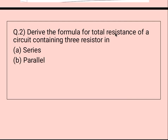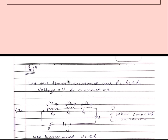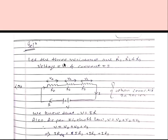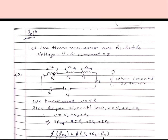Question number two: derive the formula for total resistance of a circuit containing three resistors in series and parallel. For this we assume the three resistances are R1, R2, and R3, the voltage applied is V, and the current is I. I have drawn a simple diagram here where R1, R2, R3 are connected in series, voltage applied is V, and current is I. Since the three resistances are connected in series, the voltage across each resistance will be different but the current will be the same.